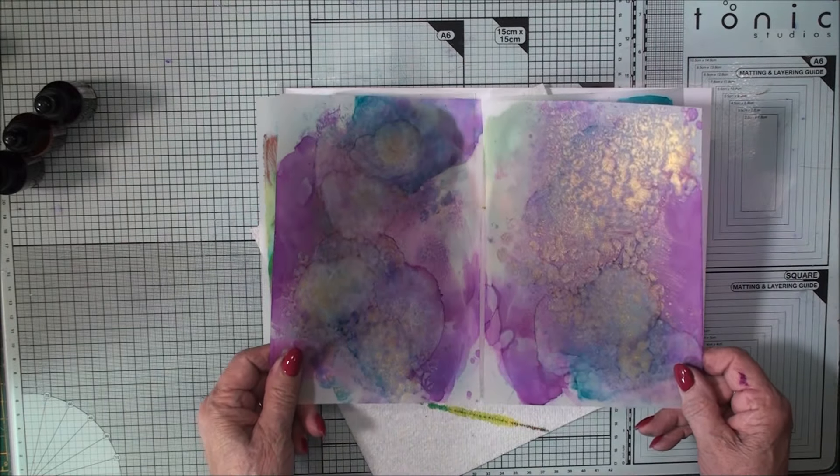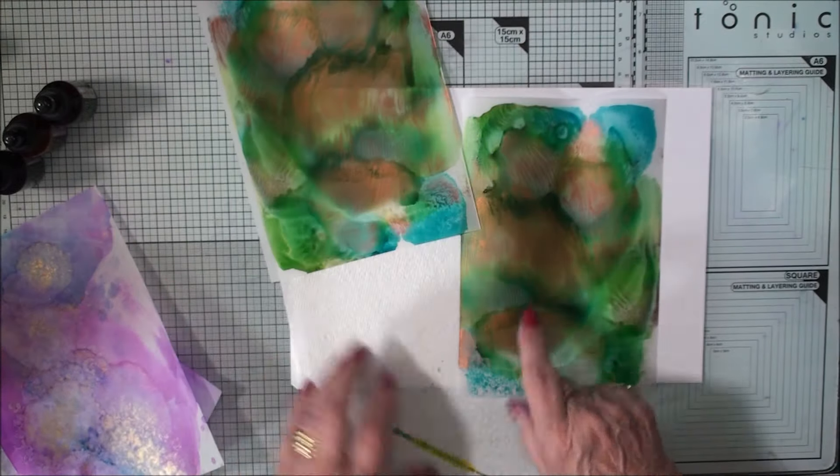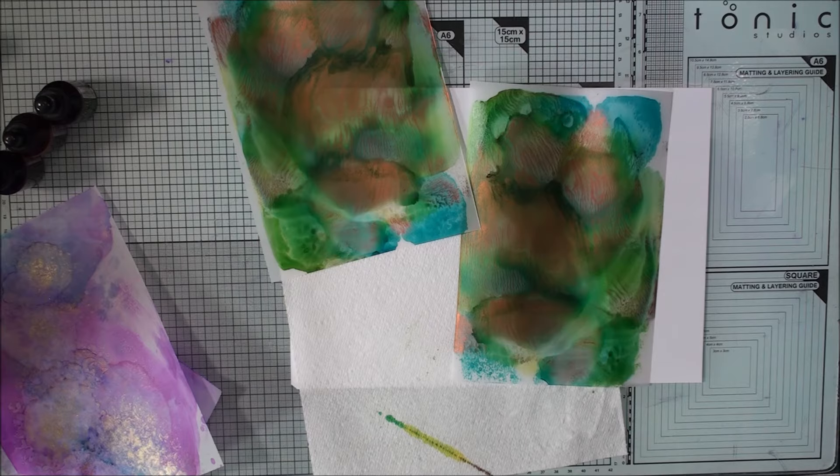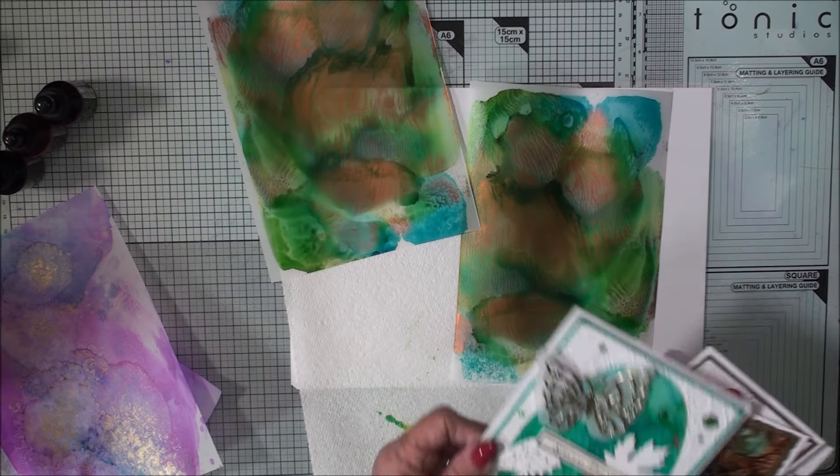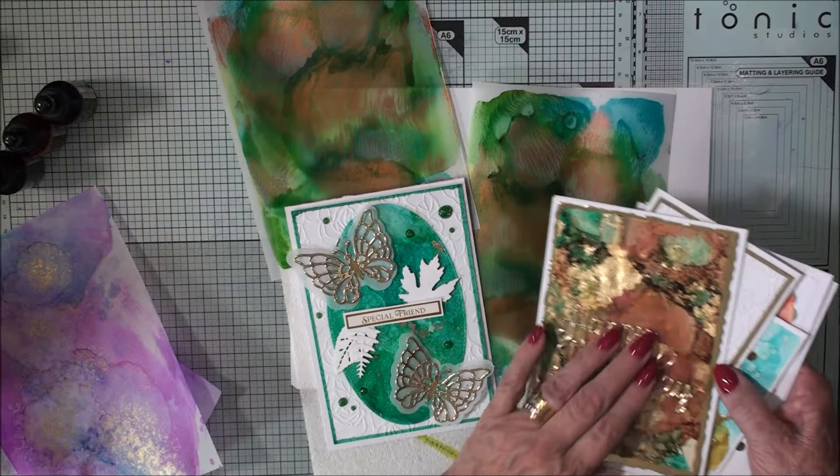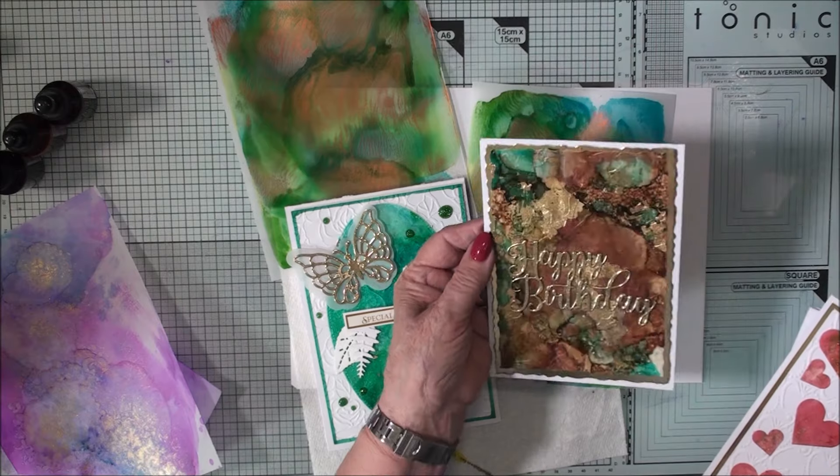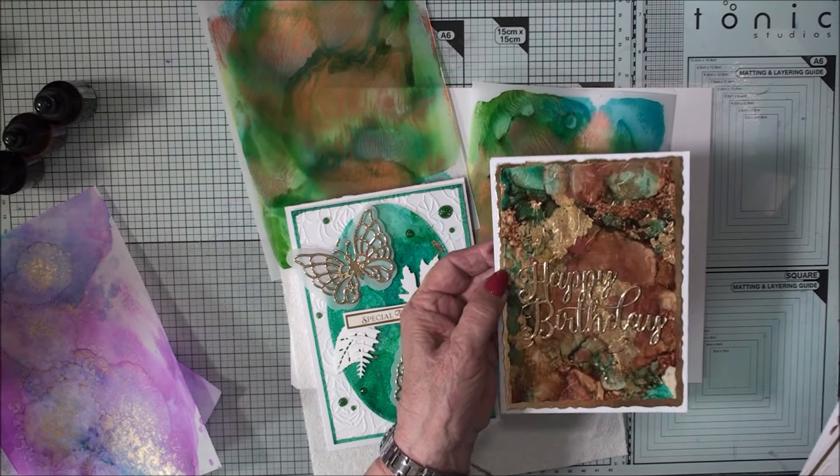This is some parchment now that's been coloured for female cards. So you've got a variety of things to do there. Now, once you've done that, that can be die cut into shapes like this one. This one is done the same. This has got gold flakes on it and that's now cut with the torn edge dies.